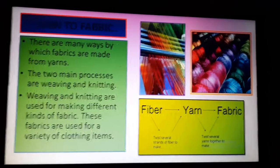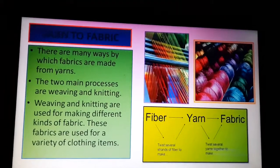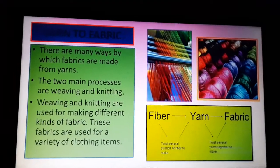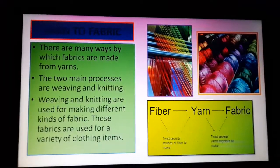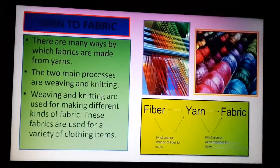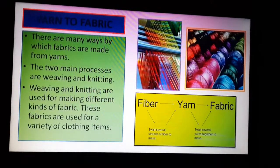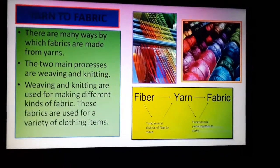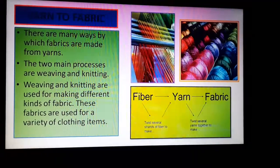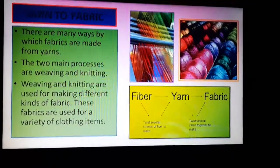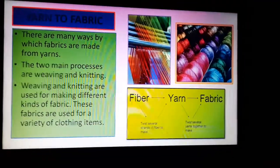From the fiber we get the yarn, and then from the yarn we get the fabric. Weaving and knitting are used for making different kinds of fabrics. After the fabrics are made, they are used for making different varieties of clothing items.